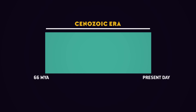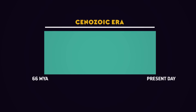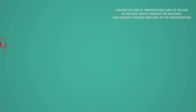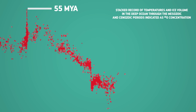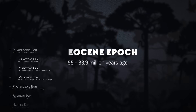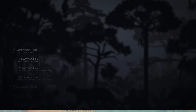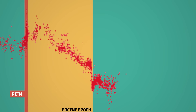And then it started to get really warm. Around 55 million years ago, the average temperature on land went up by 5 to 8 degrees Celsius in less than 20,000 years. This spate of global warming marks the transition to the next epoch, the Eocene. It's known as the Paleocene-Eocene Thermal Maximum, or PETM. Remember this one.